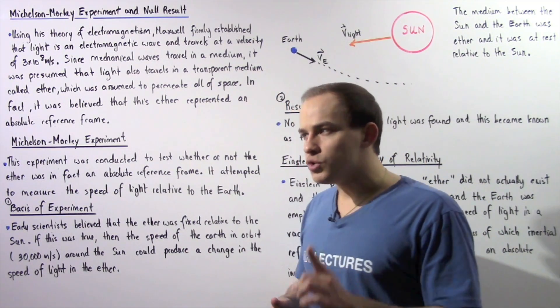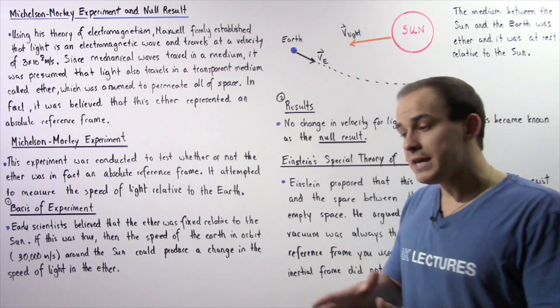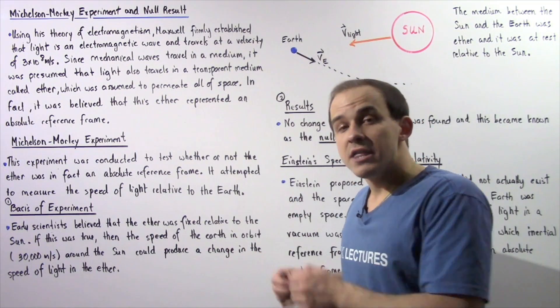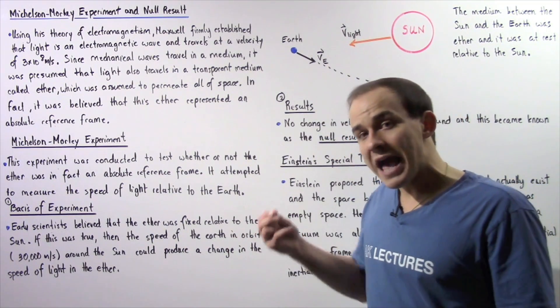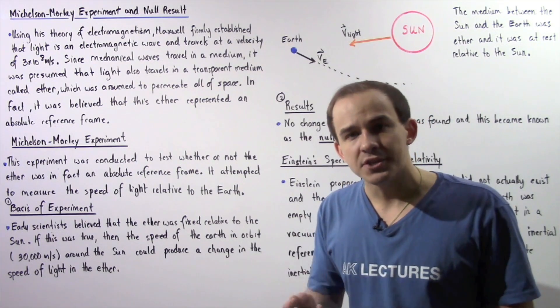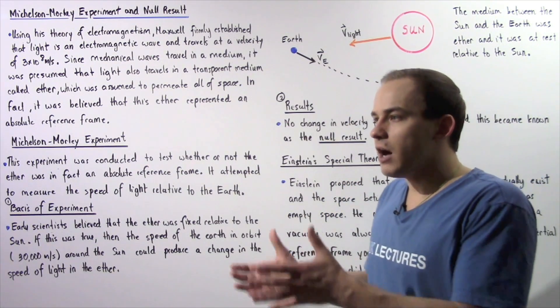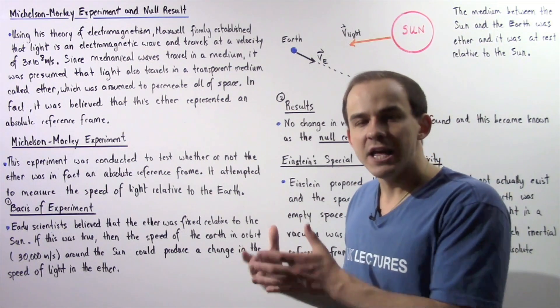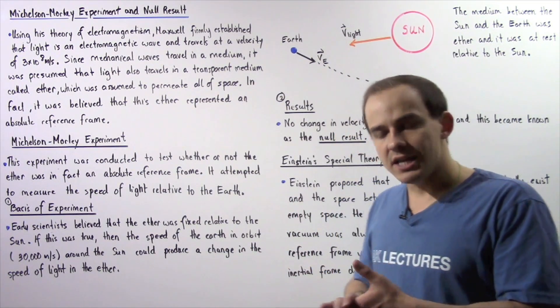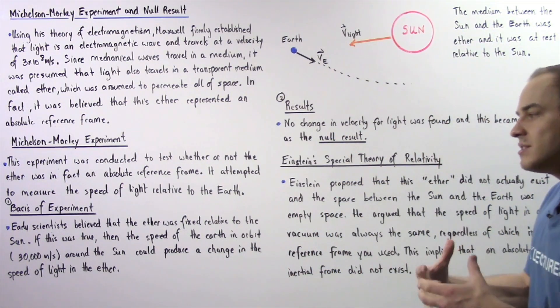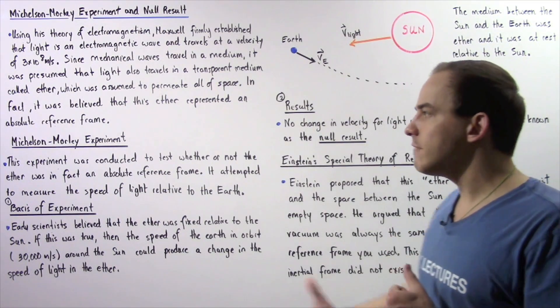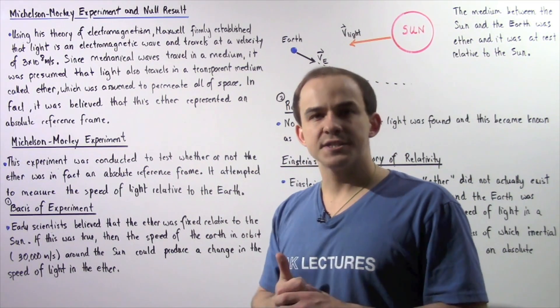Now, if we choose the reference frame to be that other car, then the speed of our car relative to that car is only 10 meters per second, so that means the relative velocity of one car is different than the actual velocity of our car. So this is exactly the basis of the Michelson-Morley experiment.